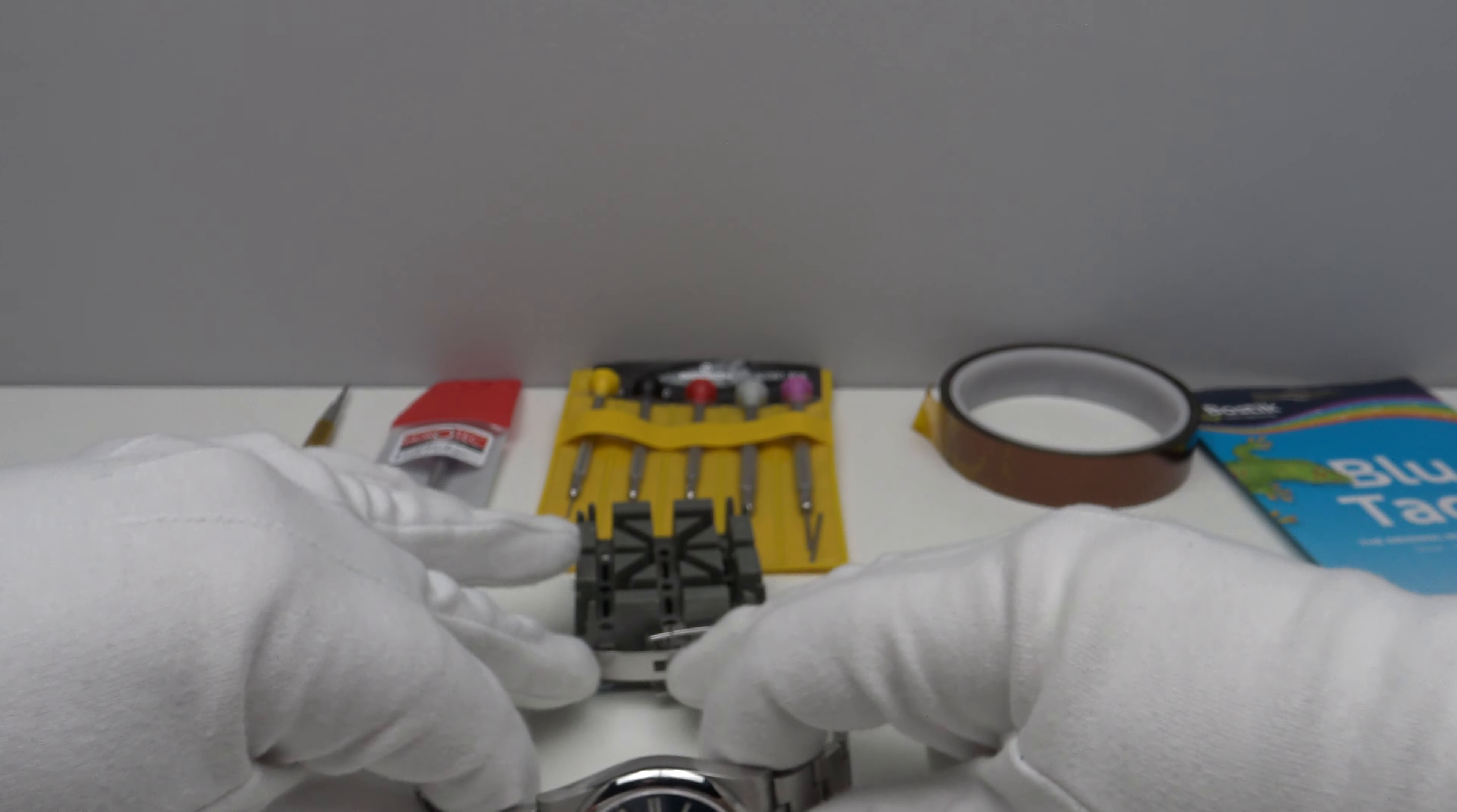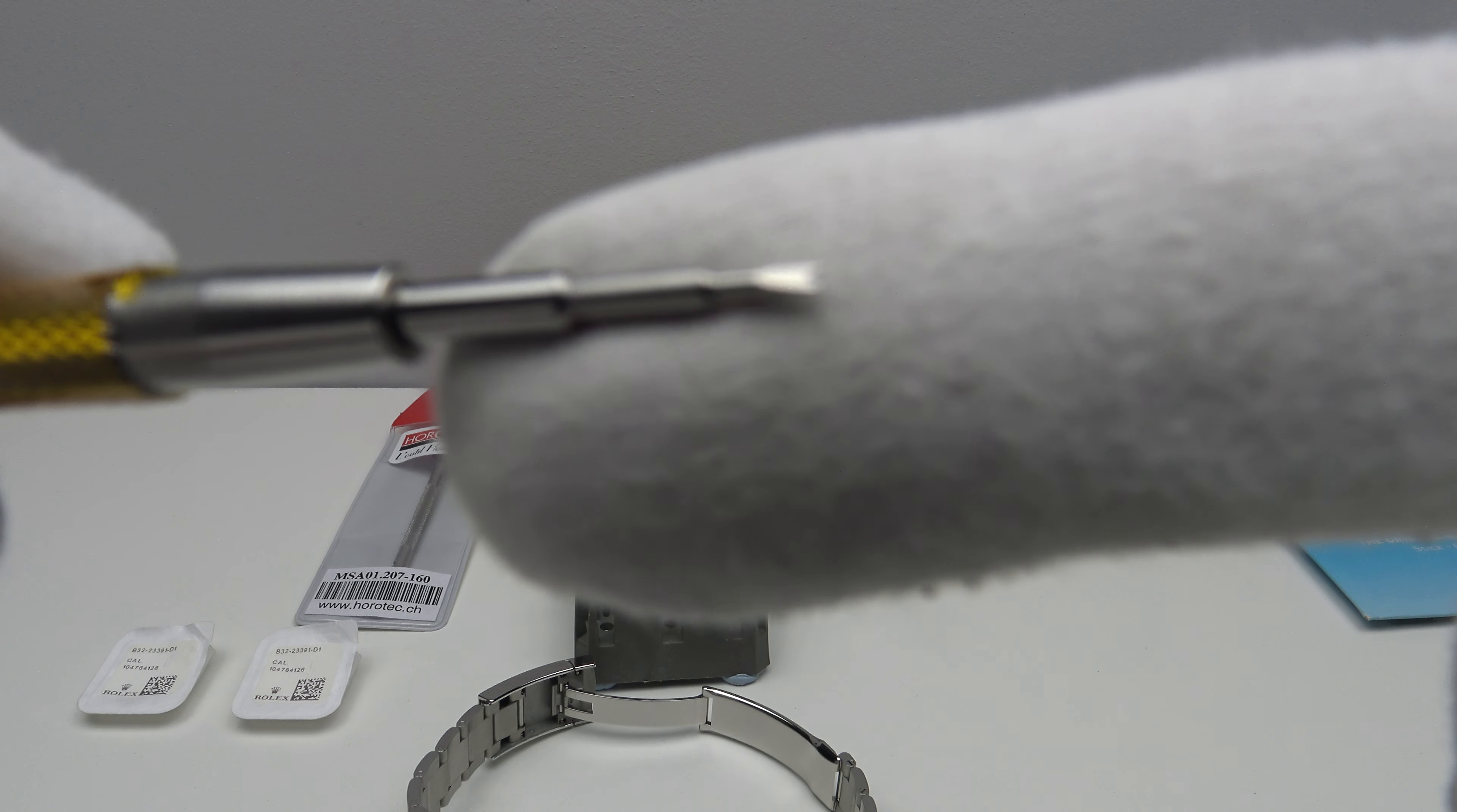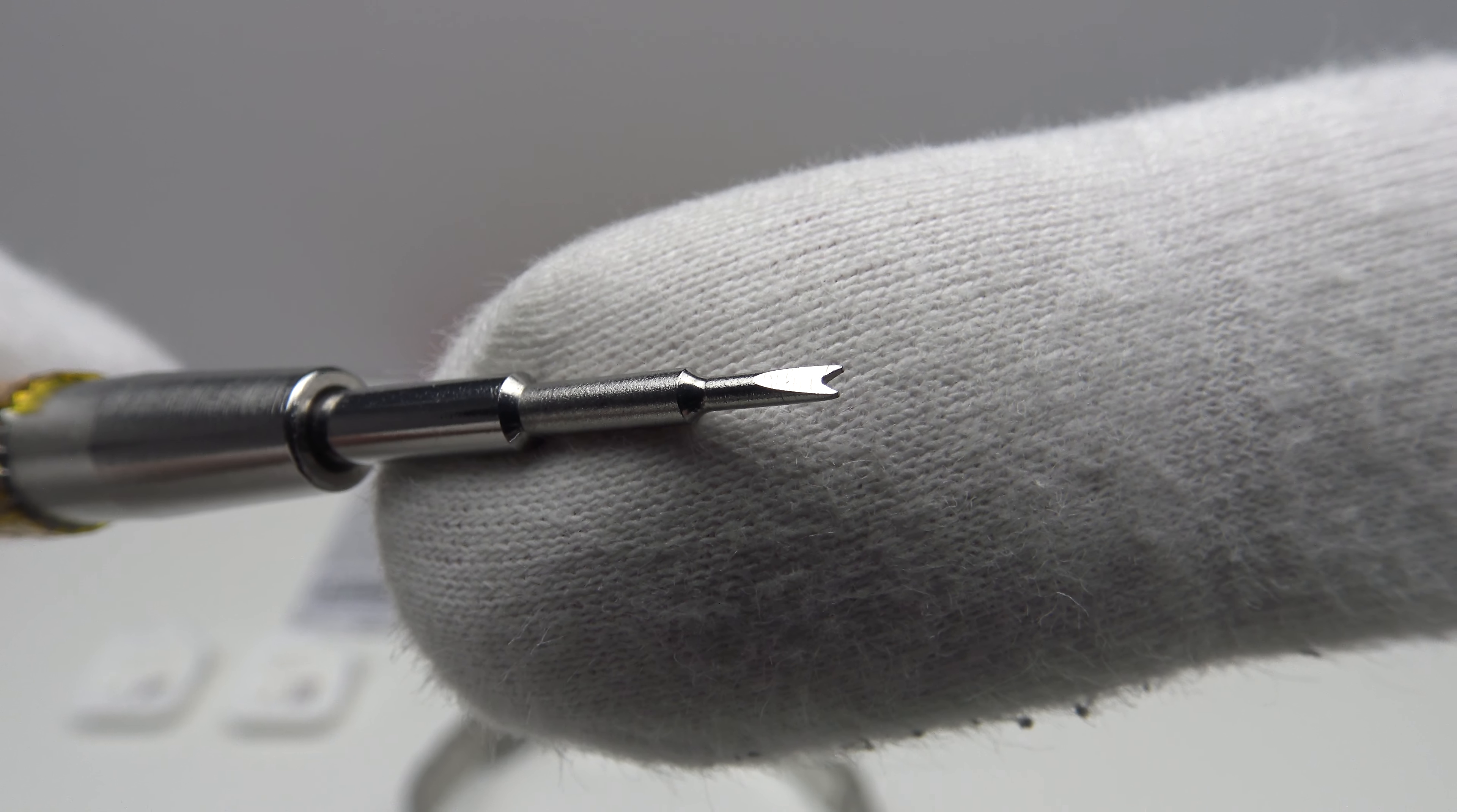So one uses the Bergeon 6767F as I've shown you with the fine tip. And this is why the very fine two prong fork in the end, just bear with me, I'll get the camera to focus on my tip of my finger. There we are.